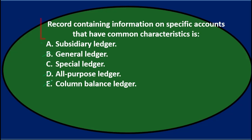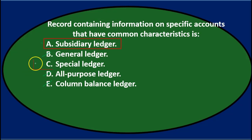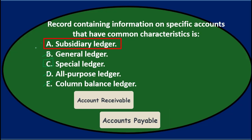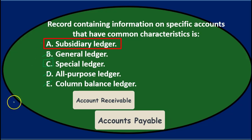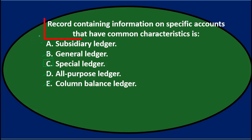Record containing information on specific accounts that have common characteristics is a subsidiary ledger or a special ledger. Of the two, I'm going to go with C — the special ledger. The subsidiary ledger is more of a specific item that breaks things out, typically accounts receivable and accounts payable by customer and by vendor. Final answer: C. Special ledger.